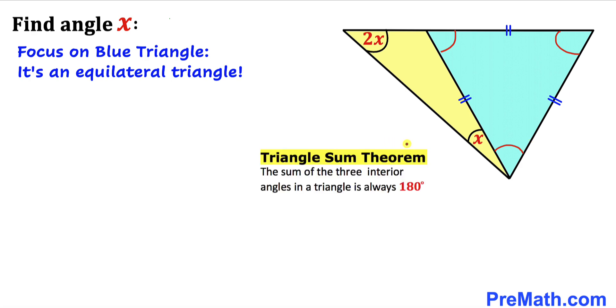We know that the angle sum theorem, the sum of three interior angles in a triangle must always be equal to 180 degrees, so therefore this angle must be 60 degrees, this is 60 degrees, and this one is 60 degrees as well.